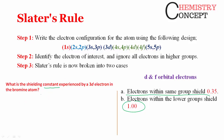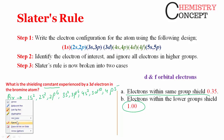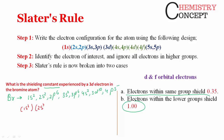Let's find the shielding constant experienced by a 3d electron in bromine. First, write the electronic configuration: 1s², 2s², 2p⁶, 3s², 3p⁶, 3d¹⁰, 4s², 4p⁵. Now arrange in groups: [1s²] [2s², 2p⁶] [3s², 3p⁶] [3d¹⁰] [4s², 4p⁵]. Since we are calculating for 3d, we ignore the groups after 3d — that is, [4s², 4p⁵] will be ignored.